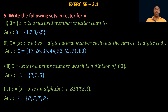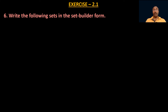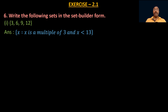Now the sixth question: write the following sets in set builder form. They give a roster form and we write it in set builder form. First: {3, 6, 9, 12}. These are multiples of 3 — specifically 3×1, 3×2, 3×3, 3×4. The last element is 12, so the multiple must be less than 13. Therefore, the set builder form is: {x : x is a multiple of 3 and x < 13}.